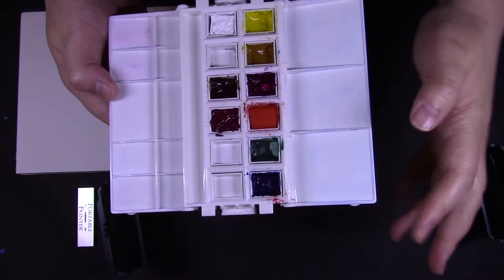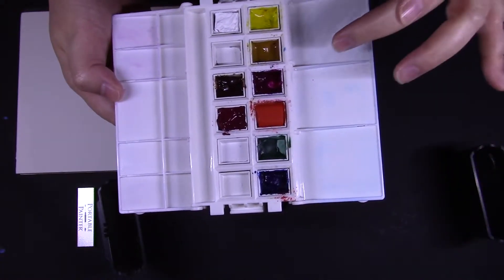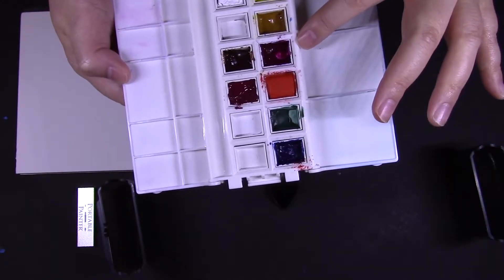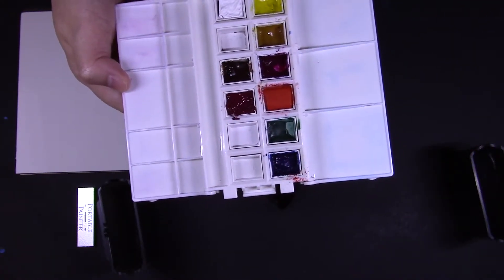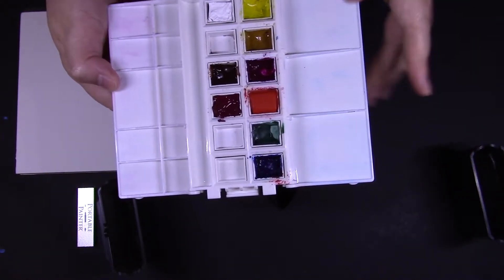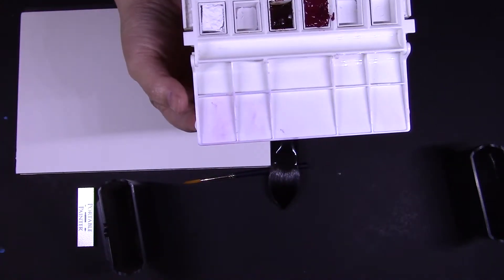And the colors I use are, I use a phthalo blue red shade, and the quinacridone magenta and the quinacridone rose, do stain quite a bit. So you can still see, but it's actually fairly light-staining for a palette.